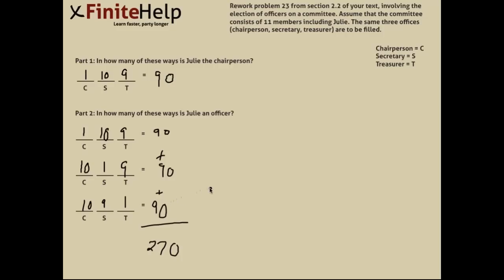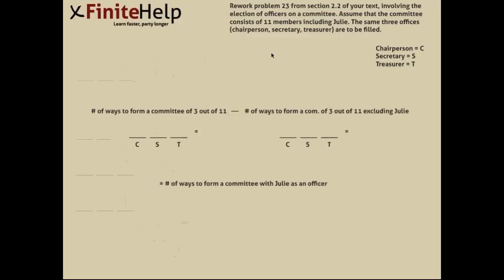And, again, there is another way to work this problem, so I'll just go ahead and show you that real quick. Let me switch screens. Okay, here we go. Alternate method. What you could have done is you could have calculated the number of ways to form a committee of three officers from 11 members, and then calculated the number of ways to form a committee of three out of 11, excluding Julie, which really means you're forming a committee of three out of 10, because you're simply removing Julie from the set of 11 members, leaving you with 10.